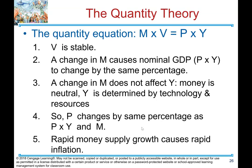The quantity equation: M times V equals P times Y. Key points: (1) velocity is stable or constant; (2) a change in money causes nominal GDP (P times Y) to change by the same percentage; (3) a change in M does not affect Y — money is neutral, and Y is determined by technology and resources; (4) so P changes by the same percentage as M; (5) rapid money supply growth causes rapid inflation.